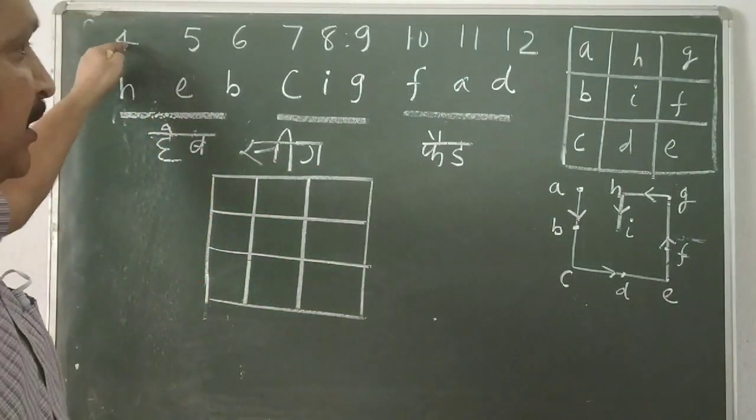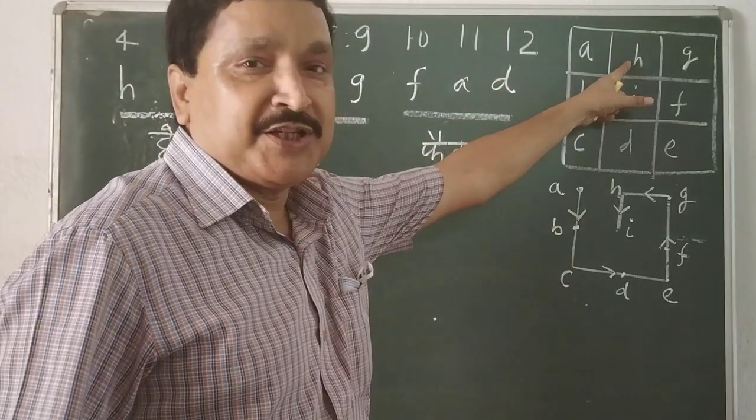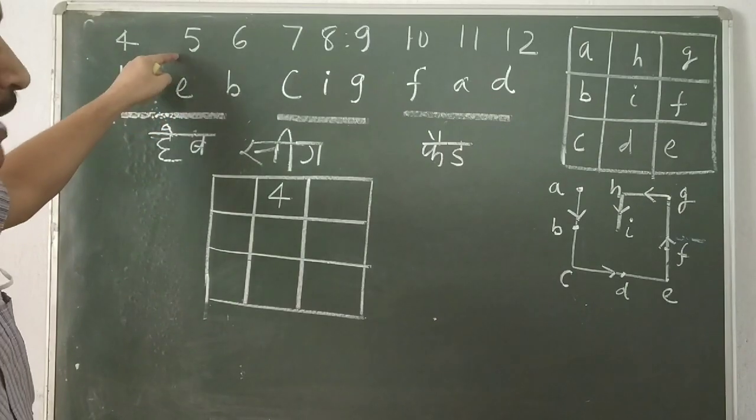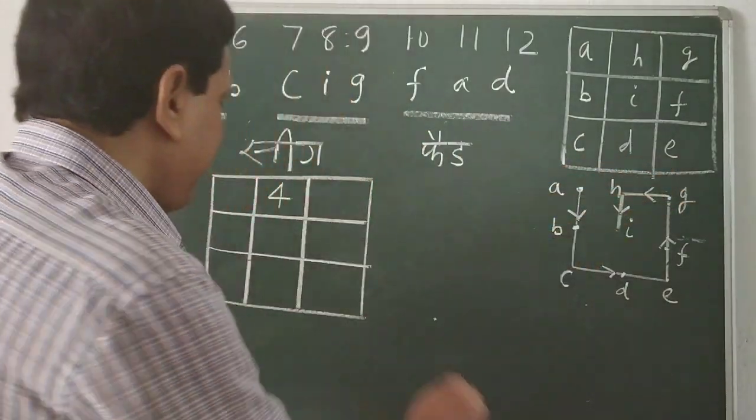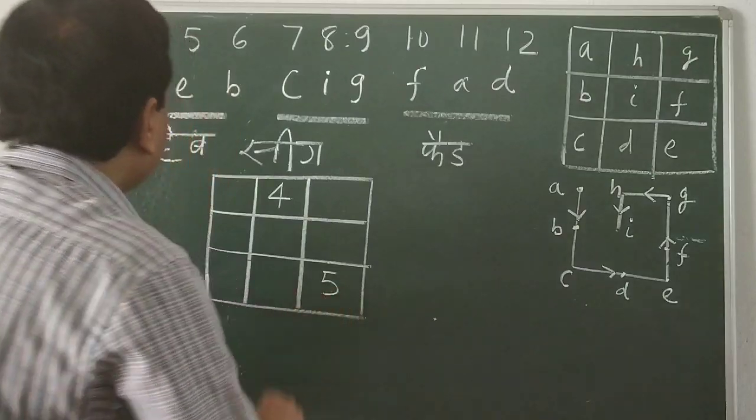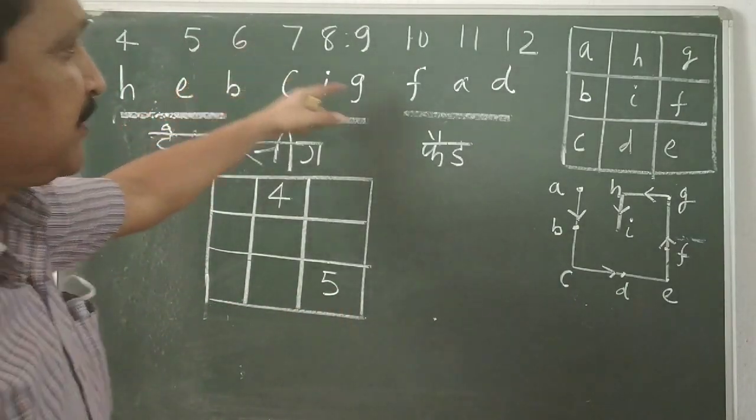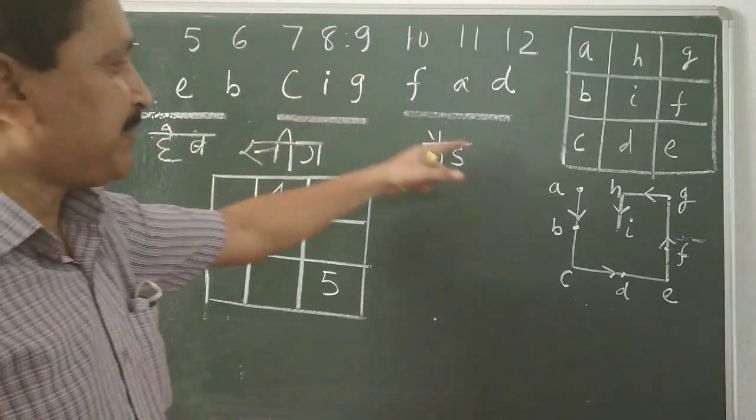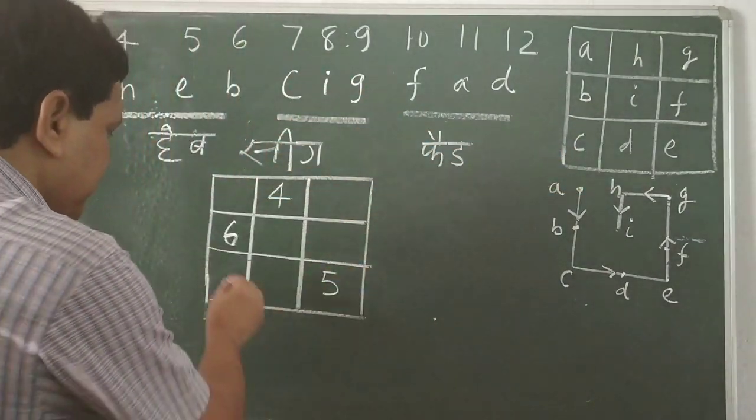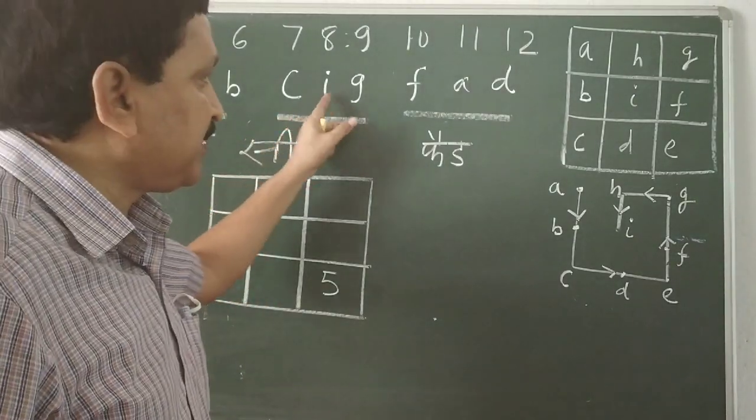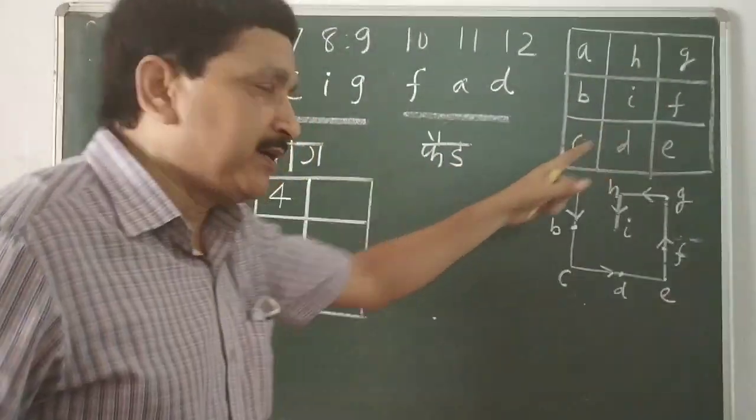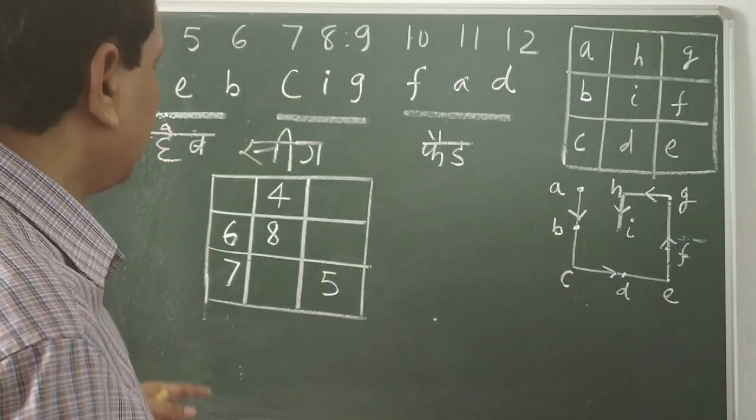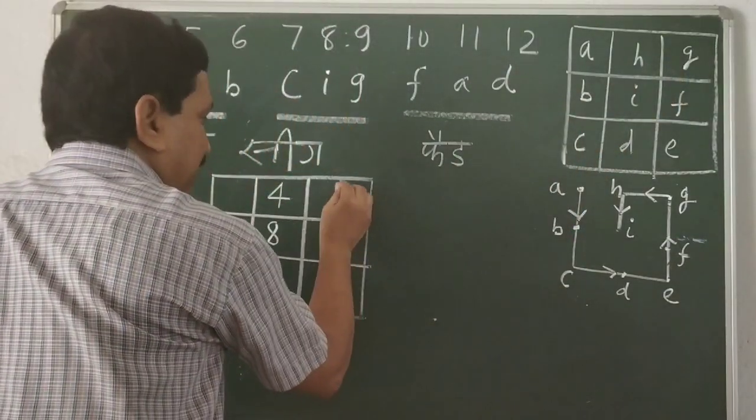Now the value of h is 4. See where is h? h is 4. So this will be 4. Now the value of e is 5. Where is e? 5. So write 5 here. Then b. b is 6, so write here 6. Then c is 7. Just see here 7. Now i is 8. i is the central element. So this is 8. Then g is 9. So where is g? g is 9. So write 9.